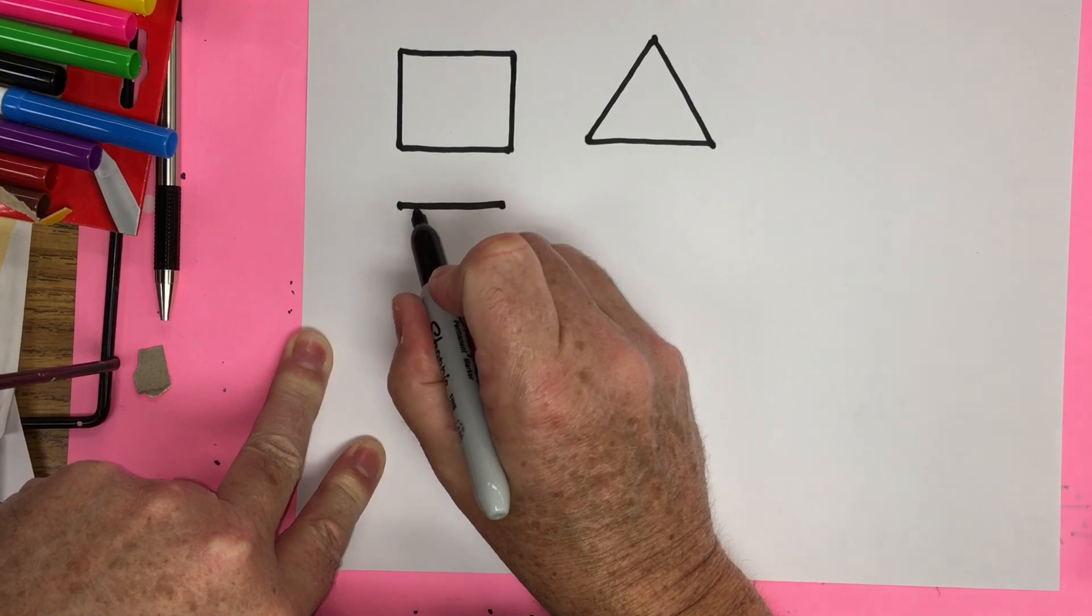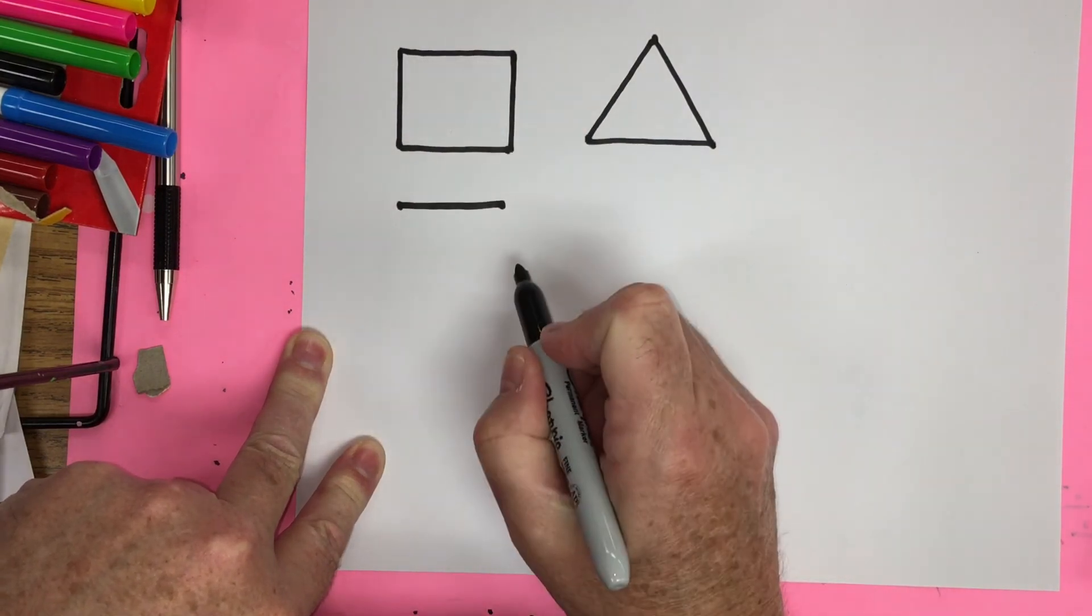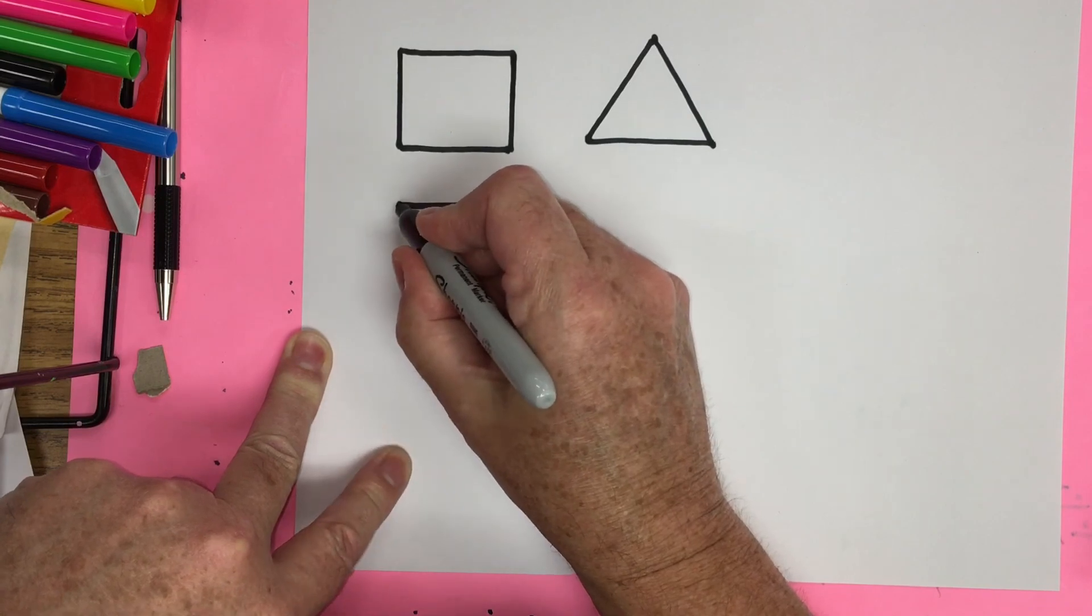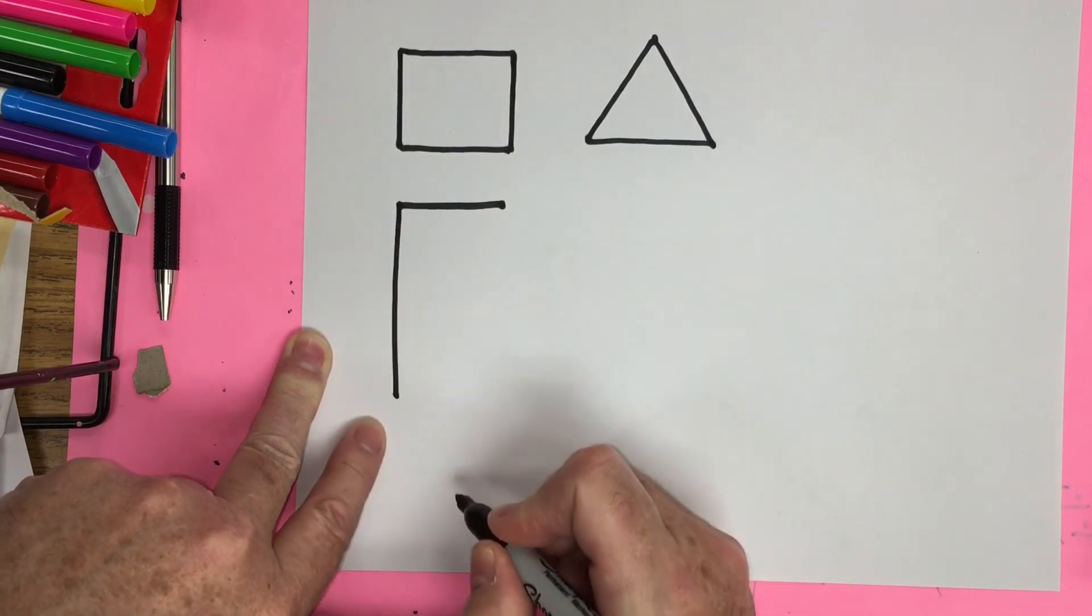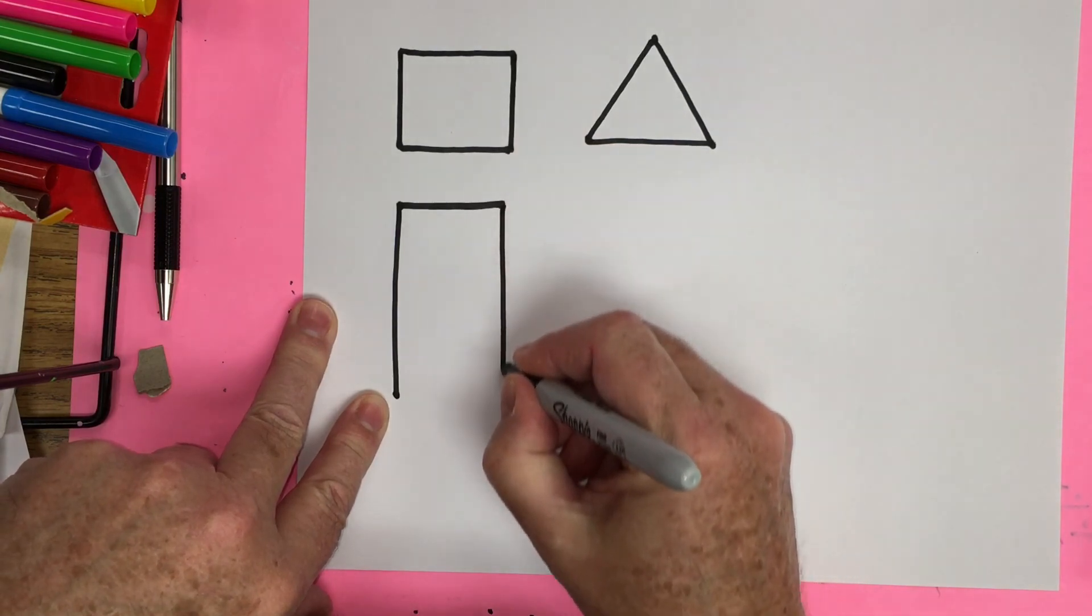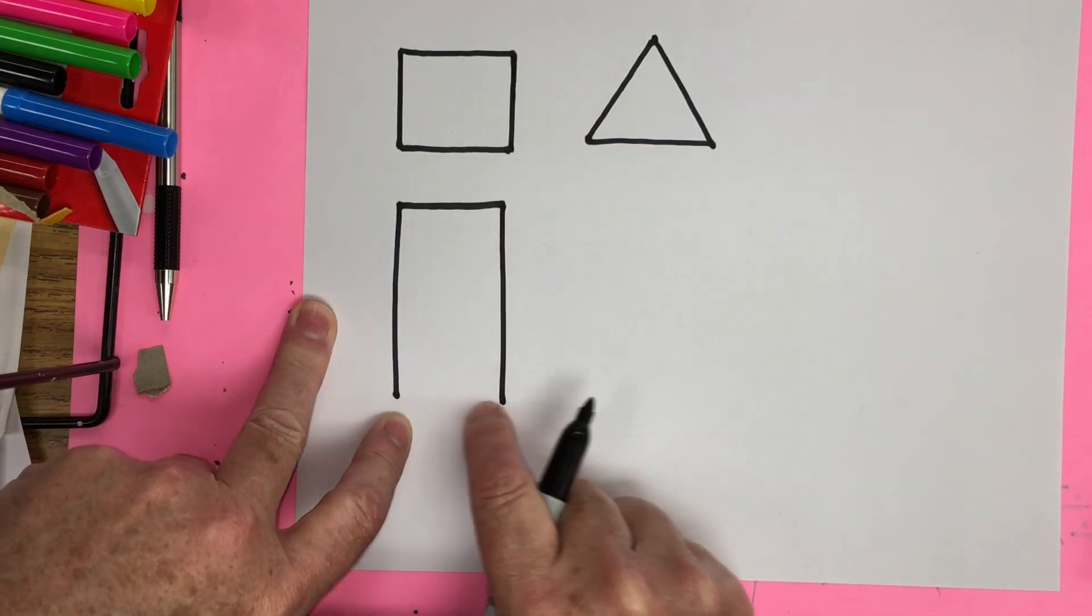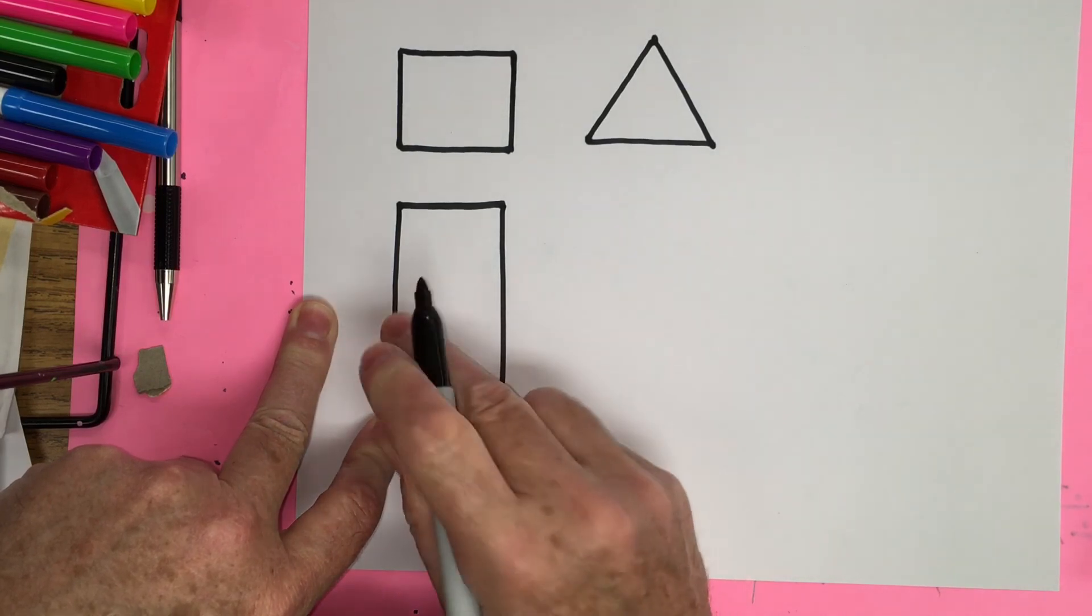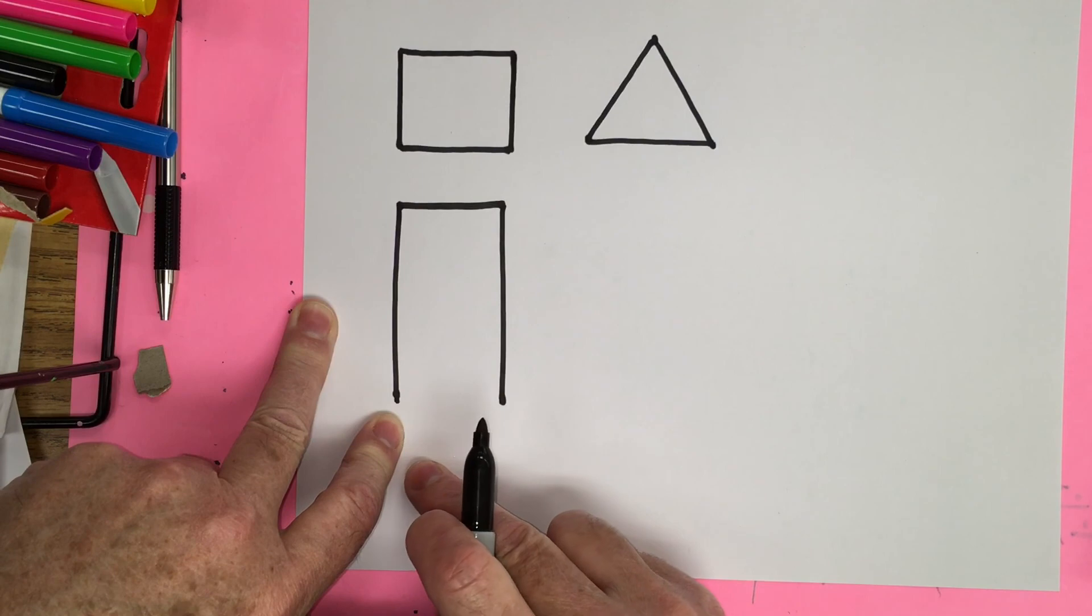So a rectangle has four sides, like a square, but one side is much longer. So I'm going to come way down and I'm going to come way down on this side. Notice I'm stopping approximately the same here because these two sides you want to have equal.